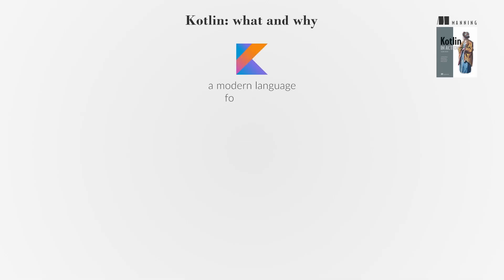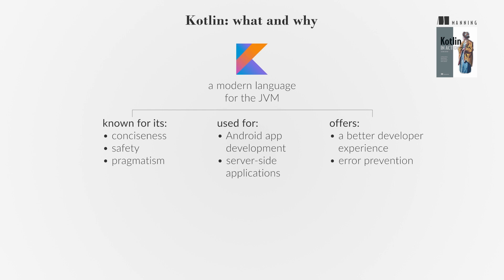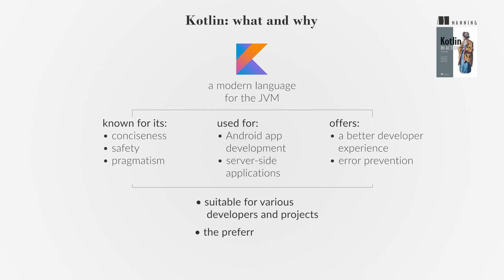Kotlin is a modern language for the JVM known for its conciseness, safety, and pragmatism. It's widely used for Android app development, server-side applications, and more. Kotlin offers a better developer experience and error prevention while being compatible with Java's ecosystem. It's versatile, suitable for various developers and projects, and has become the preferred language for Android development.